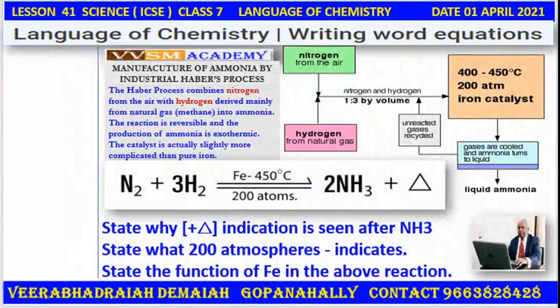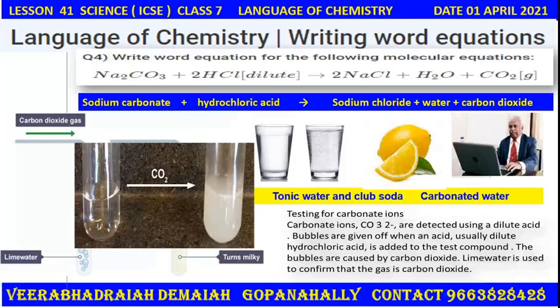We will pass on to the next topic: when sodium carbonate reacts with two molecules of HCl — that is, dilute hydrochloric acid — it gives two molecules of sodium chloride, water, and liberation of carbon dioxide. This liberated carbon dioxide, when passed through lime water, turns it milky. That is how carbonates are detected.